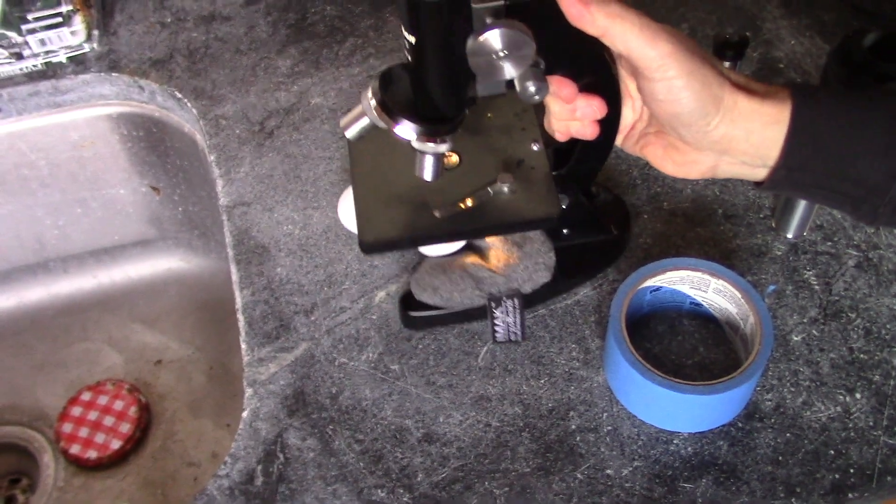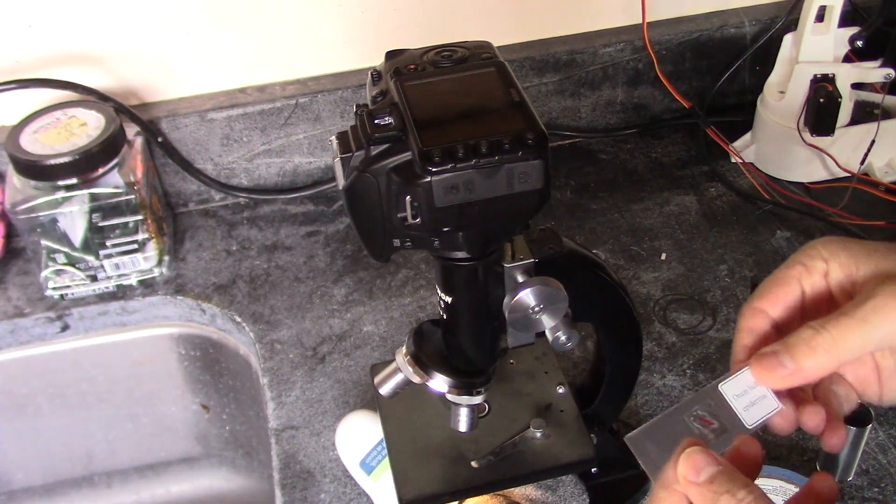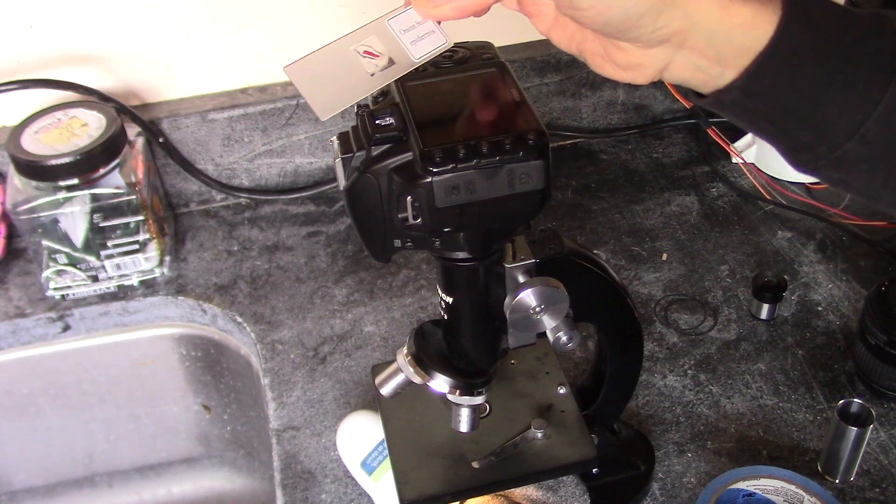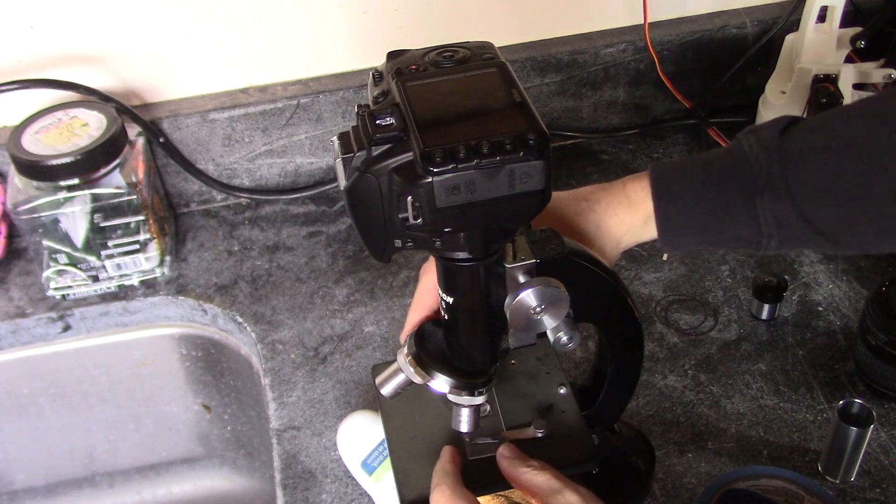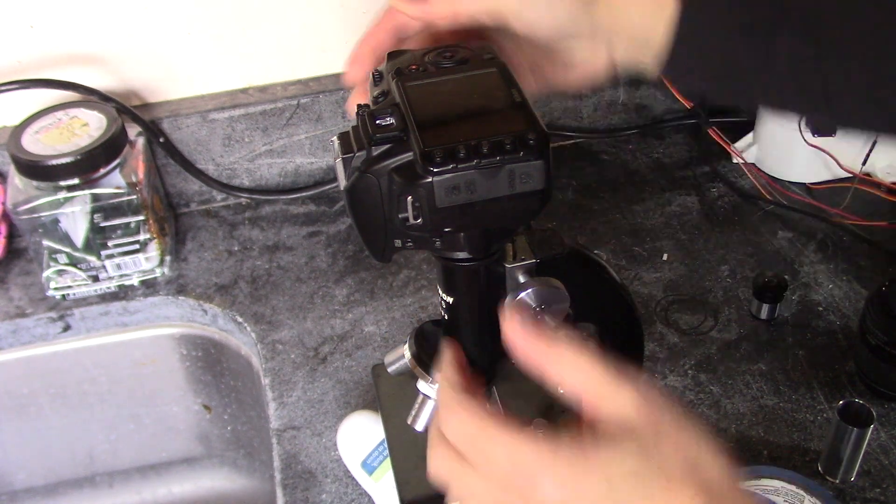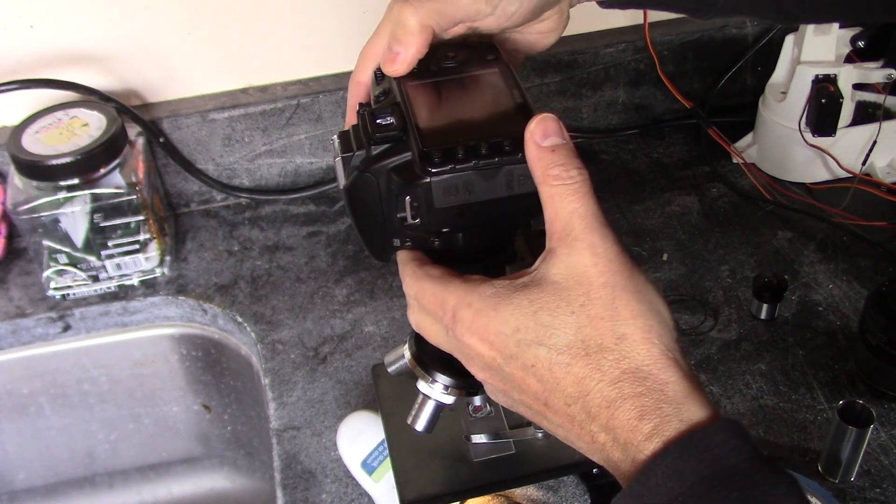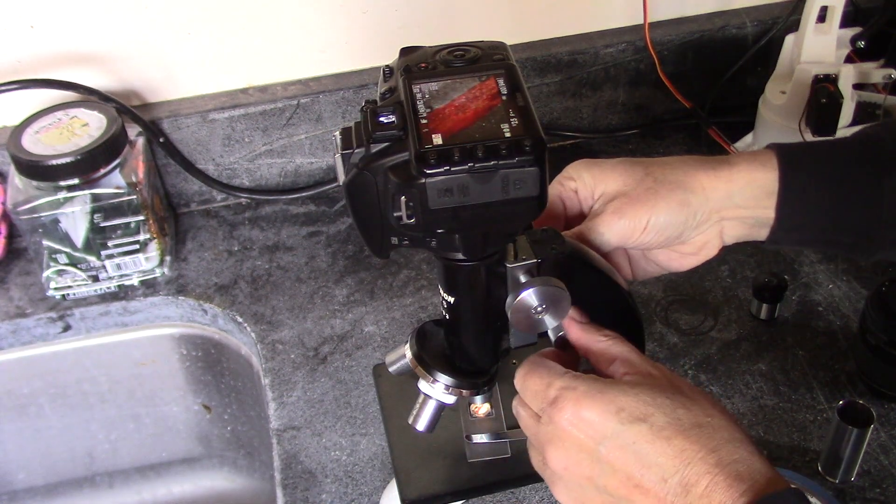So let's give it a shot here. So here is an onion bulb epidermis, and let's take a look at the low magnification. Turn the live view on, there it is, okay, all right.